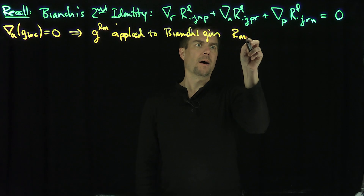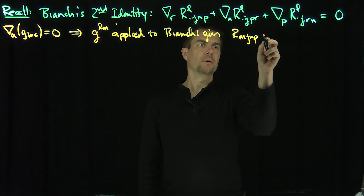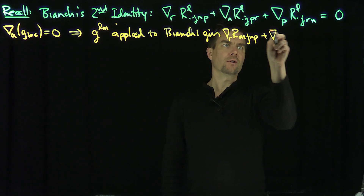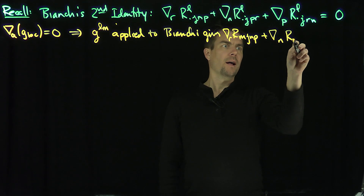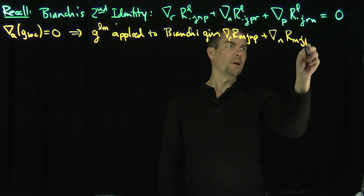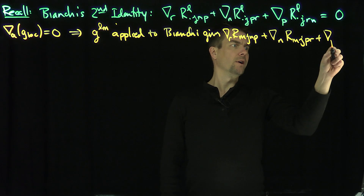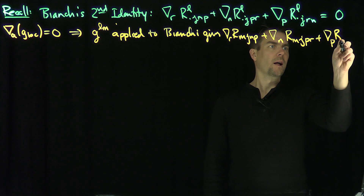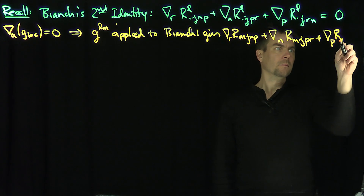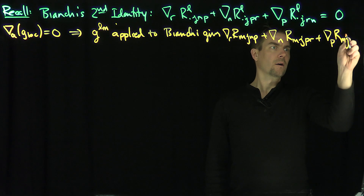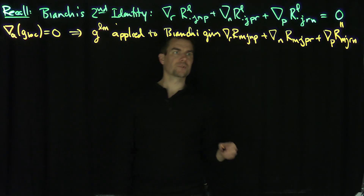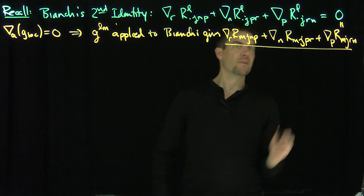Applied to Bianchi, this gives us: the R-covariant derivative of R^M_JNP, plus the N-covariant derivative of R^M_JPR, plus the P-covariant derivative of R^M_JRN is also equal to zero. So we get this lowered version of the Bianchi identity.